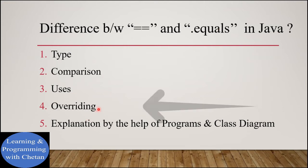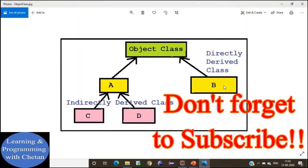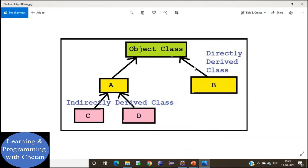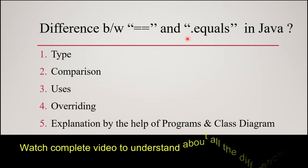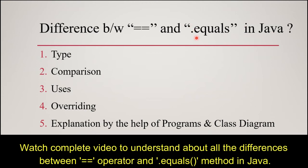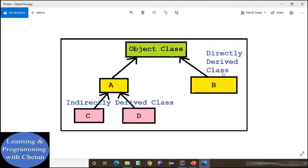Now let us discuss our next difference on the basis of overriding. We cannot override the equality operator. Whereas for the dot equals method, if our class is not overriding the equals method, then by default it will call the method present inside the Object class — and the equals method in Object class has the same implementation as the equality operator, meaning it is used for reference comparison. We can override this method inside our class to use it for content comparison.